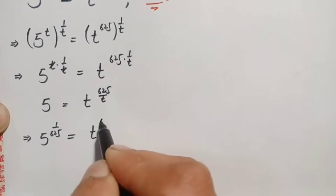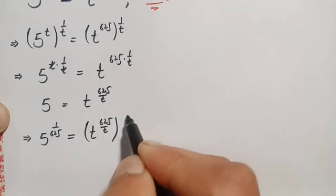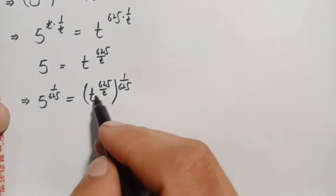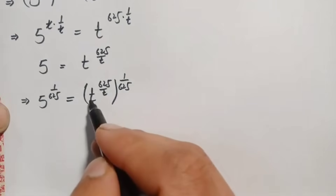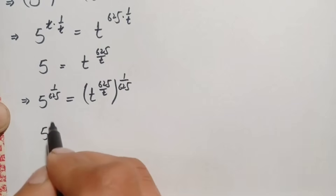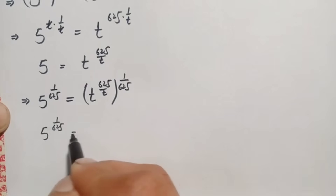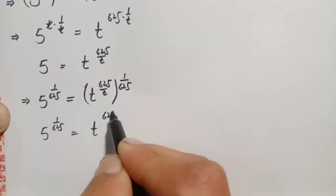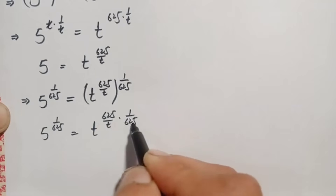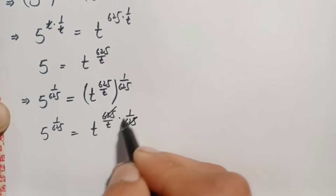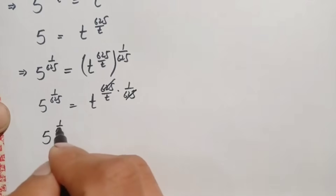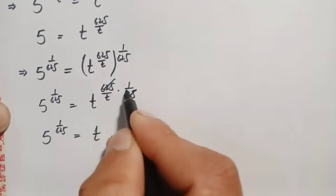Again on the right-hand side we use the exponential identity: l raised to power m, whole raised to power n, equals l raised to power m times n. So we multiply the two powers on the right-hand side: t raised to power 625 divided by t times 1 over 625. Since 625 in the numerator and 625 in the denominator cancel, this becomes t raised to power 1 by t.